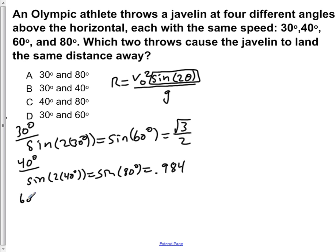Then we do 60 degrees. The sine of 2 times 60 degrees is equal to the sine of 120 degrees, which is the same as square root of 3 over 2.